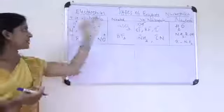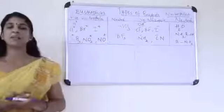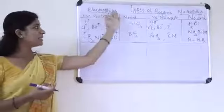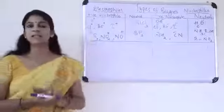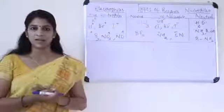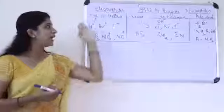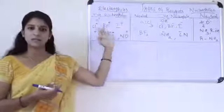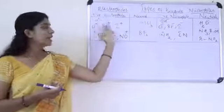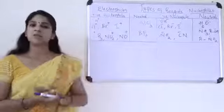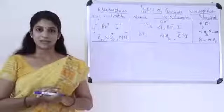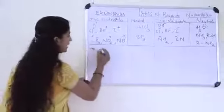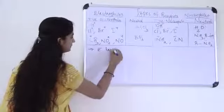First one: electrophiles. What is meant by electrophiles? Electrophiles means electron loving — 'phile' means loving. That is, electrophiles are the positively charged species which can accept an electron pair in a reaction. That is, electrophiles are electron-loving species.